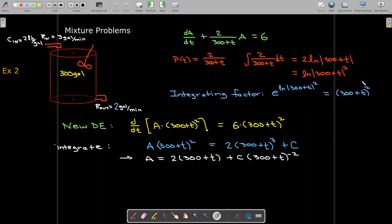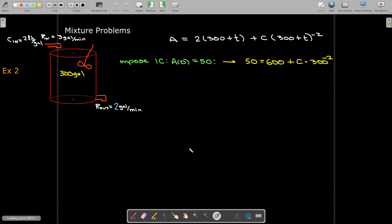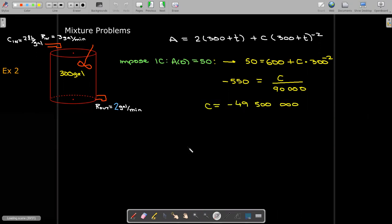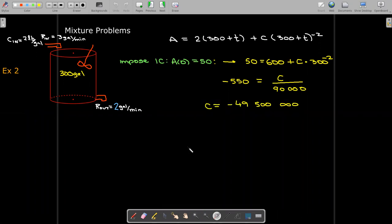And I need to find out my value of c. I'm going to go ahead and solve for A. I've just divided both sides by the integrating factor. And we're going to impose the same initial condition. And when I work out the arithmetic, I'm going to see that c is going to be a rather large number, 49,500,000. But just recall that that is being divided by 300 plus t in parentheses squared.